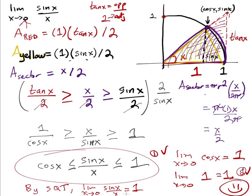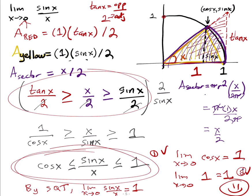You could also work with the two inequality pieces separately. For example, take tangent x over 2 ≥ x over 2, multiply by 2, rewrite tangent as sine over cosine, then divide by x. That gives sine x over x ≥ cosine x — which is the same result we got from flipping. The goal is always to get sine x over x in the middle.